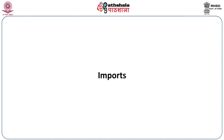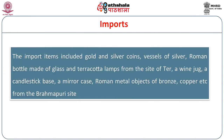What imports were made from other countries? The import items included gold and silver coins, vessels of silver, Roman bottles made of glass and terracotta, lamps from the site of Ter — that is, Tagara-nagara of the Deccan — a wine jug, a candlestick base, a mirror case, and Roman metal objects of bronze and copper from the Brahmapuri side. These goods were imported from different countries.